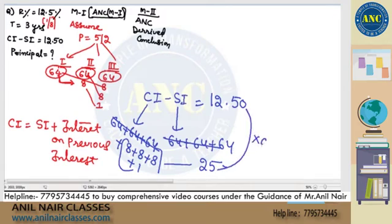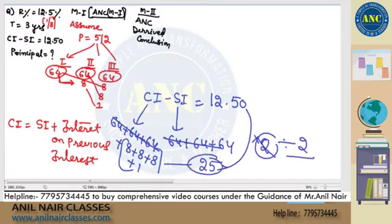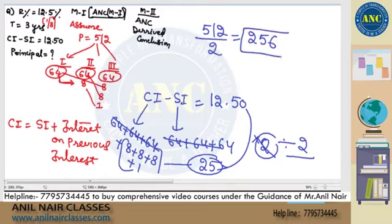25 is becoming 12.5, so it is multiplied by 2, or in reverse, divided by 2. 25 is R per the R percentage divided by 2. The answer is nothing but 512 divided by 2 — answer is 256. No formulae required.